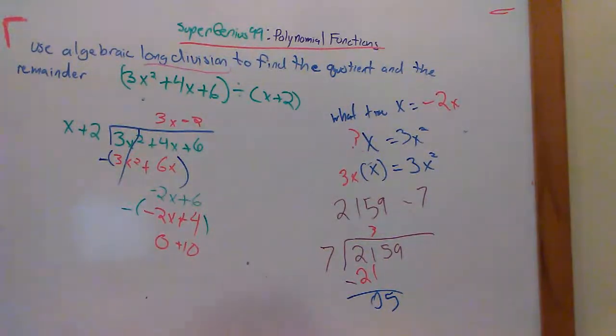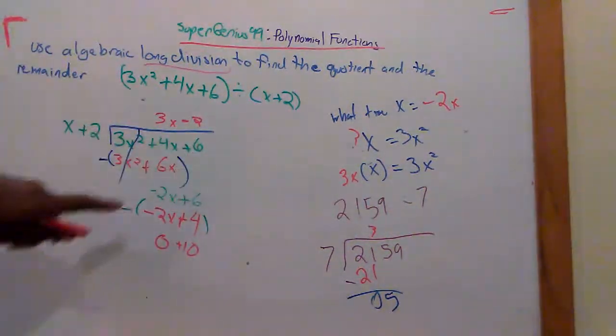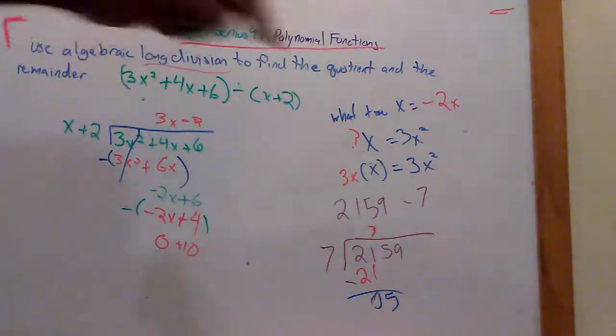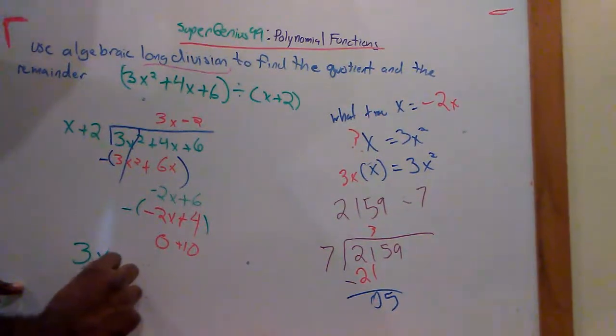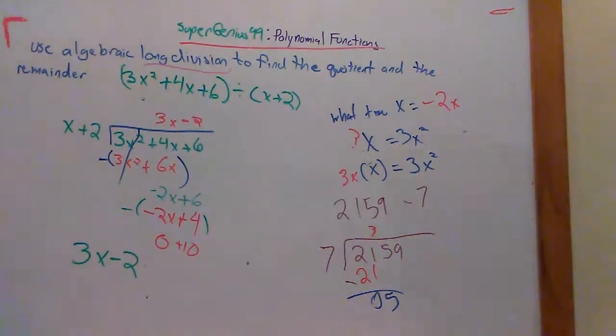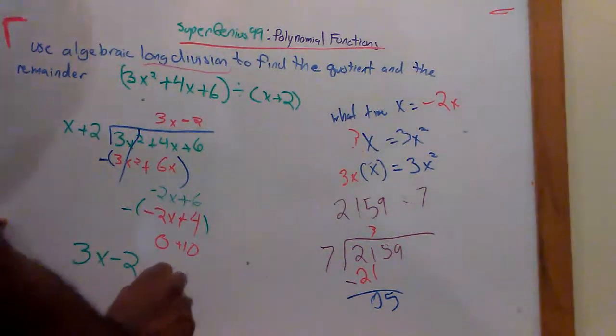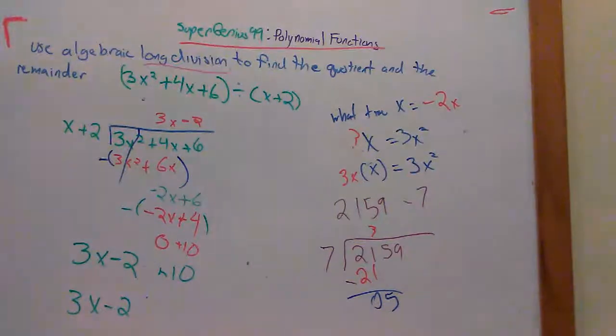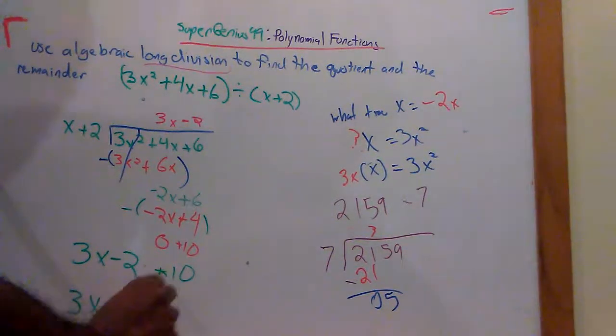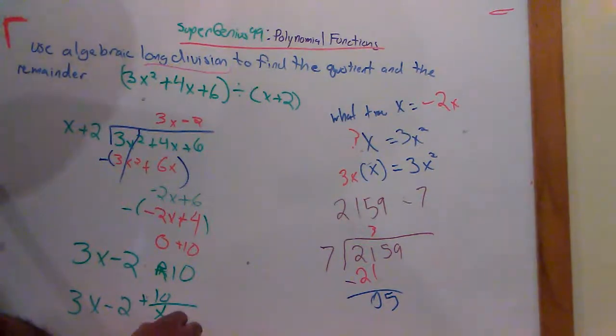So our answer here is 3x minus 2. And here's our remainder because we don't have any numbers. So your remainder is what happens when you run out of numbers to divide by. So it's 3x minus 2. Your remainder is ten. But you're going to put ten over your divisor. So you can have remainder ten or 3x minus 2 plus ten over the divisor.